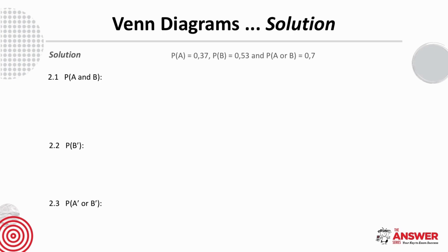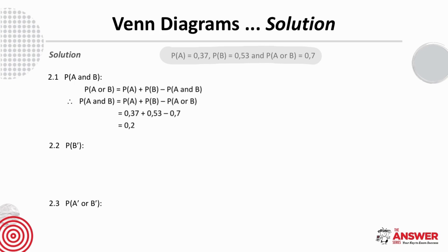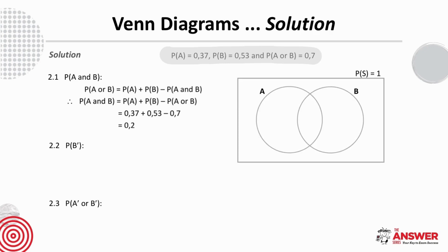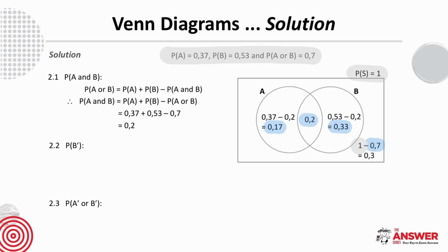You may have noticed that this question doesn't specify that you need to use a Venn diagram, but it is a good option for these types of questions. The information is given in probabilities, so we use the equation true for any two events to calculate the probability of A and B. Once we've calculated that, we draw the Venn diagram by filling in 0.2 first, then calculating what is in A only and B only — just like the previous example, except this time we're working with probabilities. Like the previous example, we also calculate the probability outside of A and B, which is 0.3.